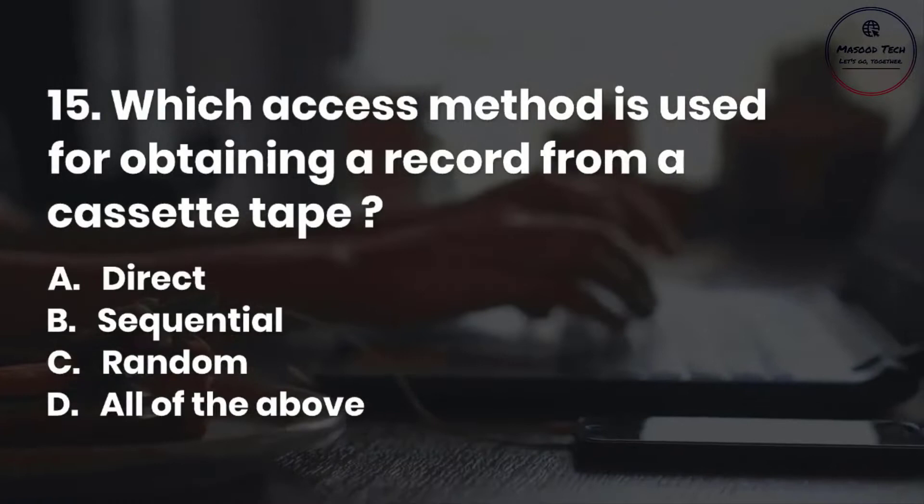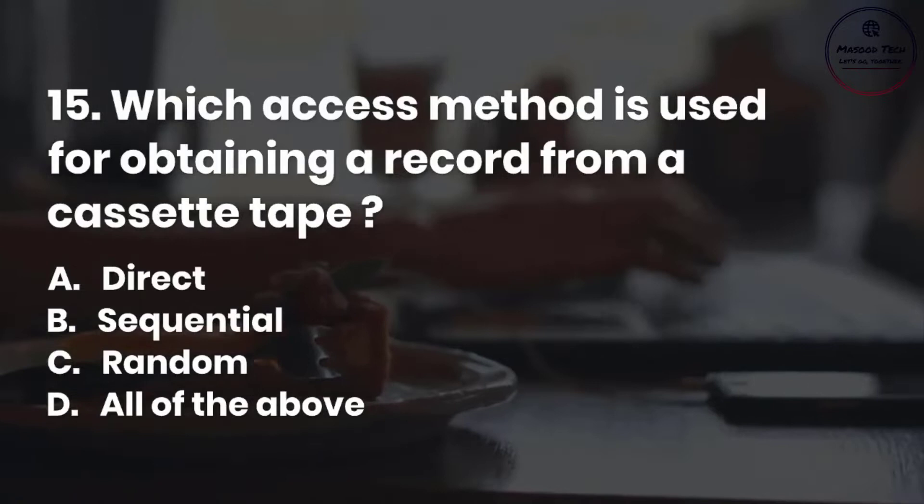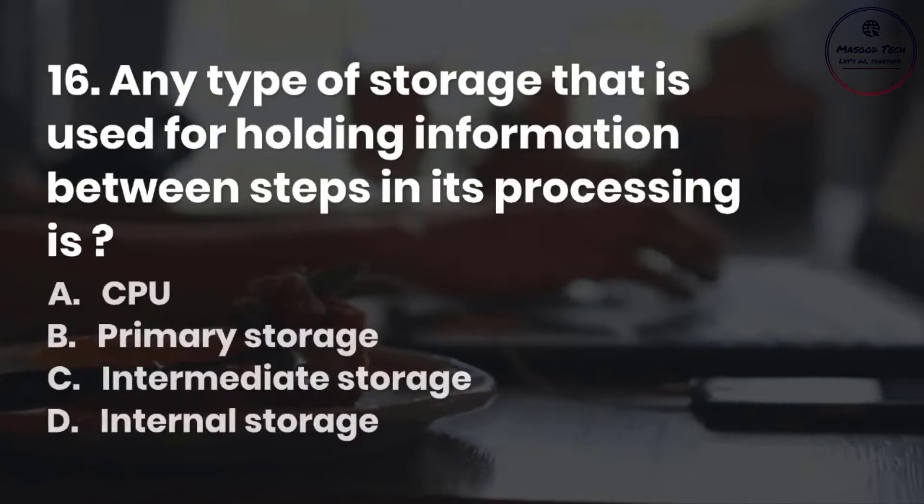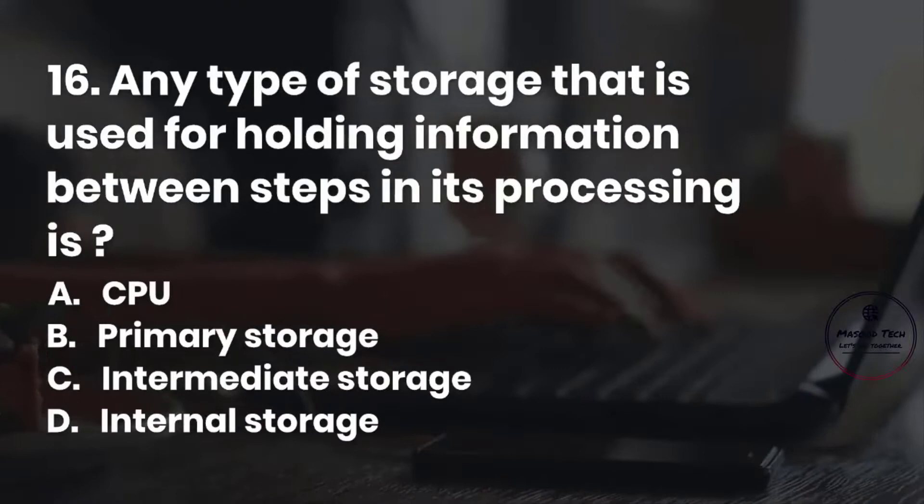Number 16. Any type of storage that is used for holding information between steps in its processing is: A. CPU. B. Primary storage. C. Intermediate storage. D. Internal storage. Correct answer is C.